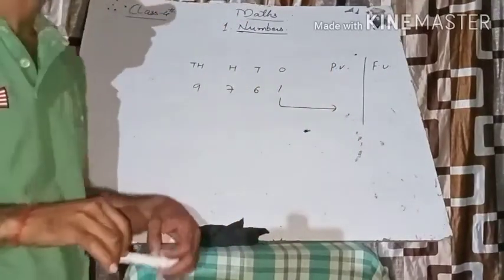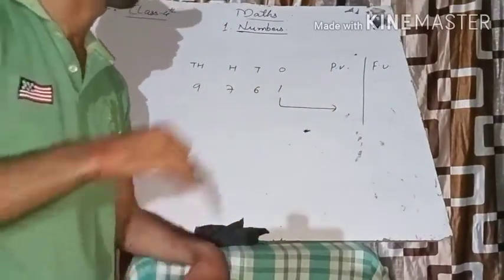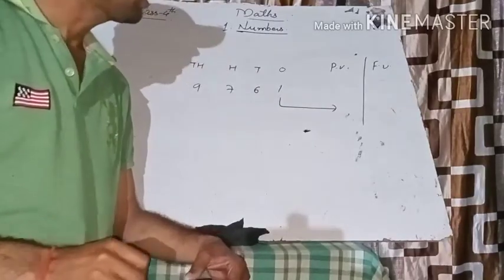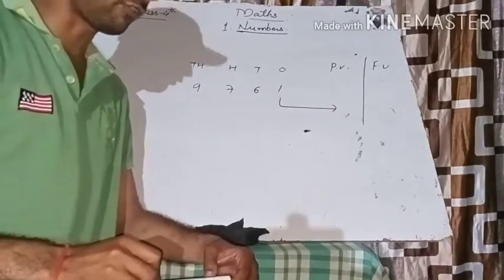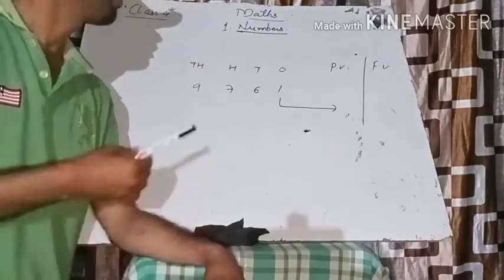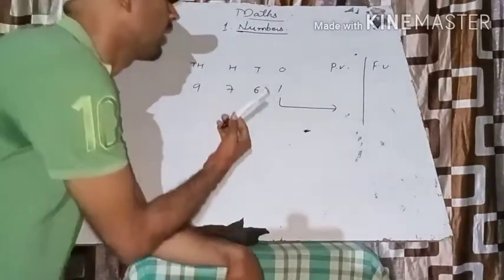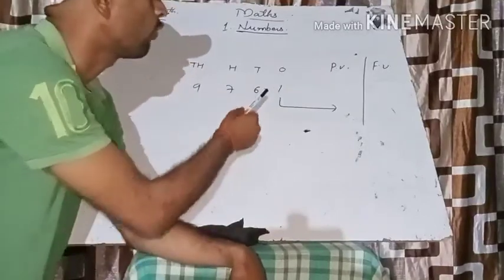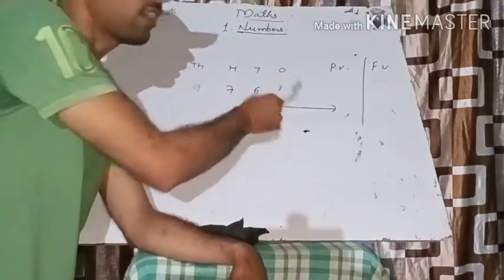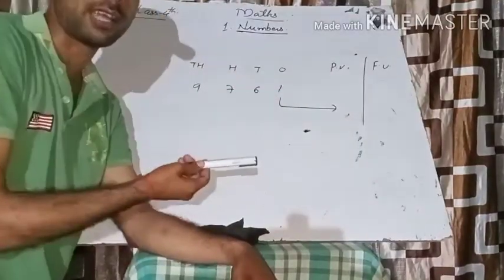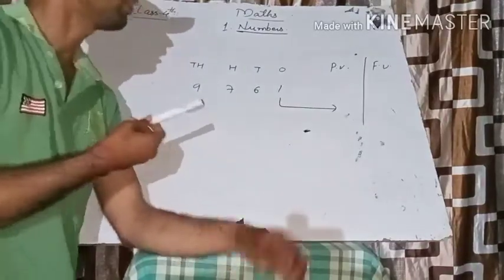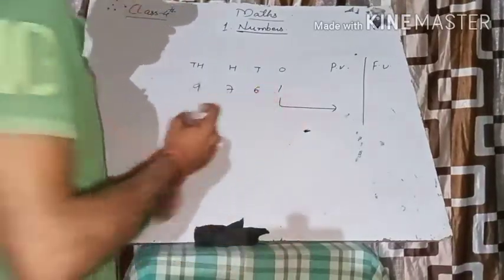Before we start, we have to learn about the place value of a number and what is the face value of a number. The place value is the product of the digit and the place where that digit is lying or occupied.